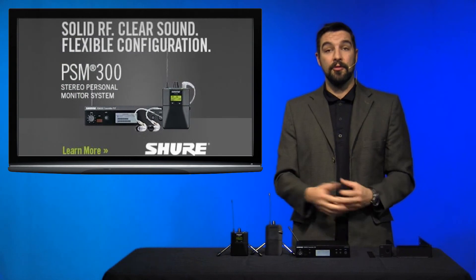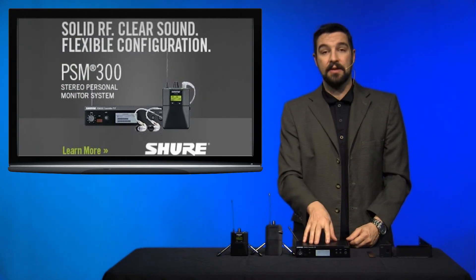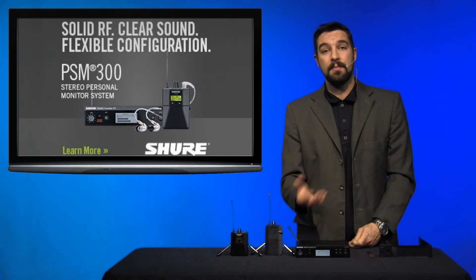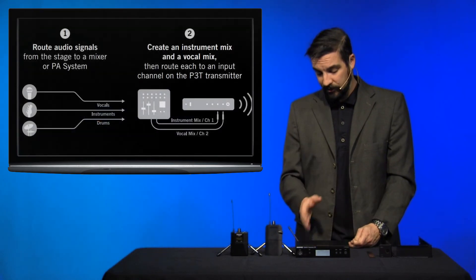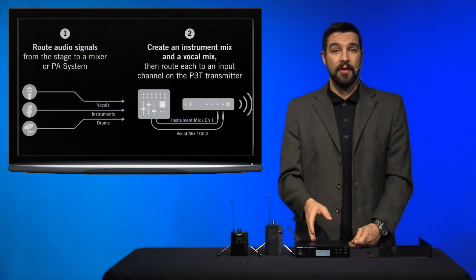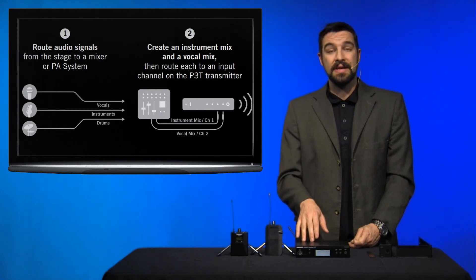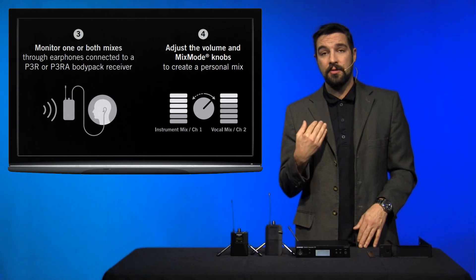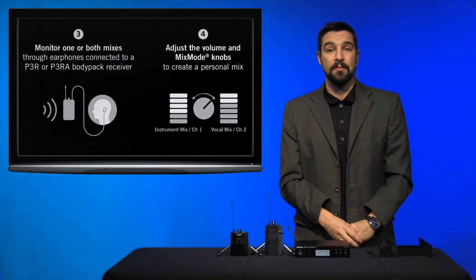Unlike wireless microphones, multiple receivers can be synced to the transmitter. This is especially helpful if you're using something like mix mode where you might have instruments on the left channel, vocals on the right, and using Shure's mix mode making a single mono mix for your own personal use with your own personal mix between the two.